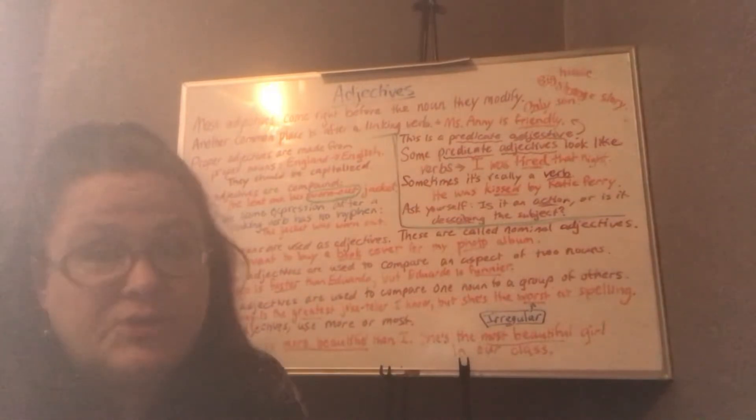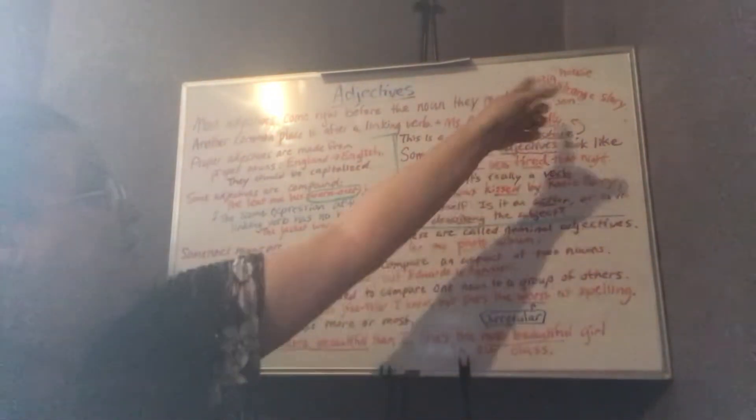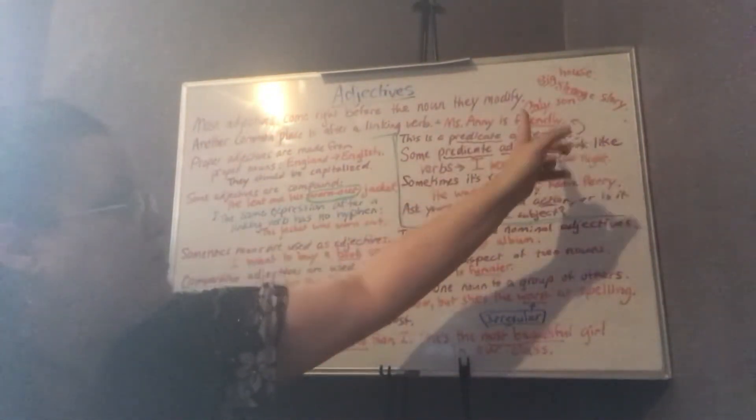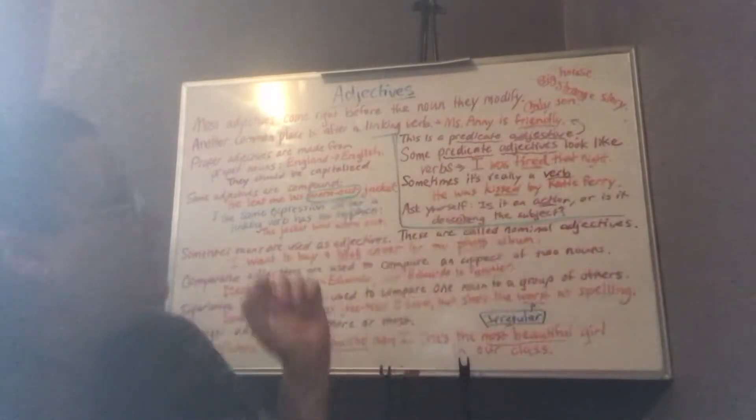In English, most adjectives come right before the noun that they describe. For example, a big house, a strange story, an only son.